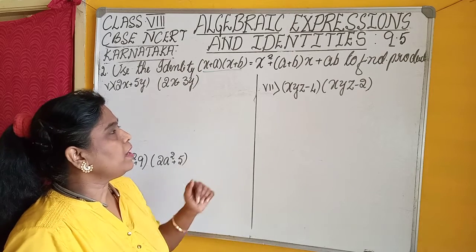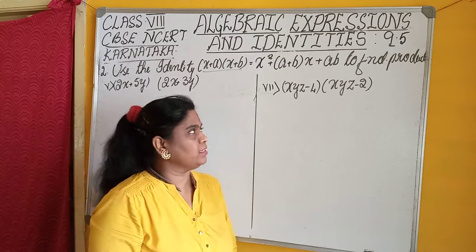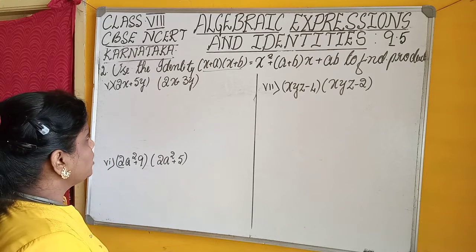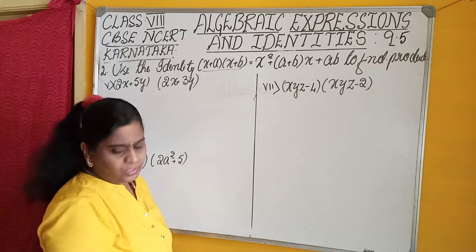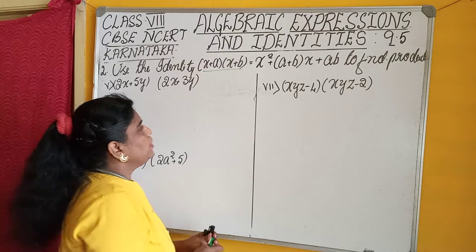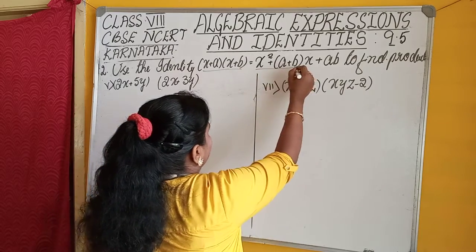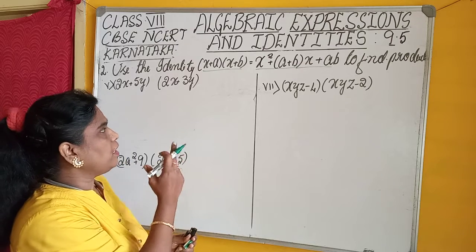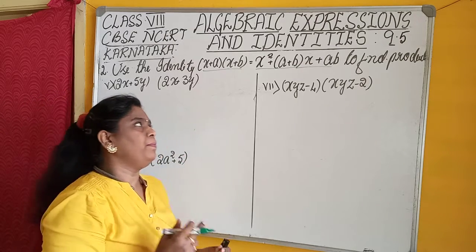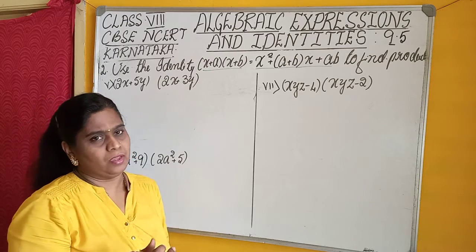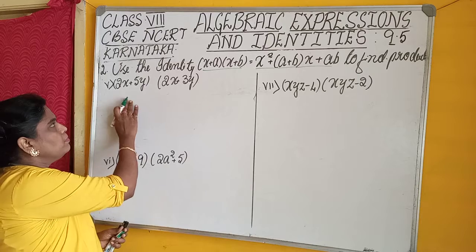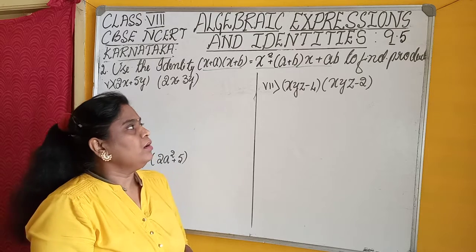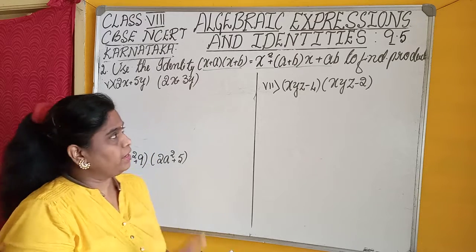Chapter 9 is Algebraic Expressions and Identities. In that, the second problem: use the identity (x+a)(x+b) = x² + (a+b)x + ab. This identity is already given as the heading. We have to find the products of some given polynomials by using this identity.